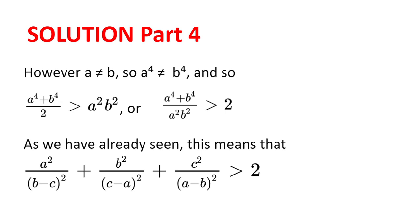Rearranging, we get (a⁴ + b⁴) / (a²b²) > 2, and as we have already seen this means that a² / (b - c)² + b² / (c - a)² + c² / (a - b)² is greater than 2.